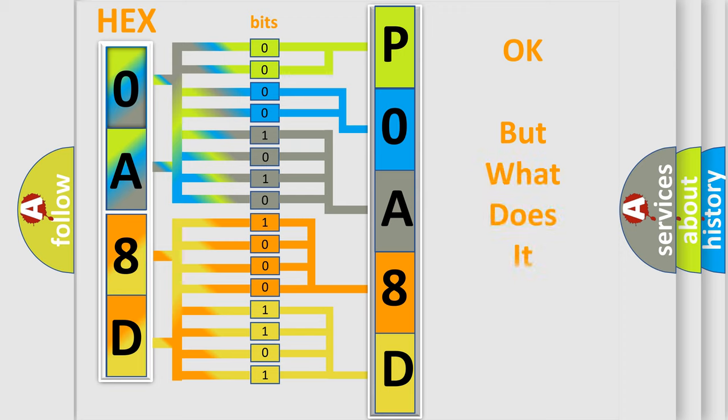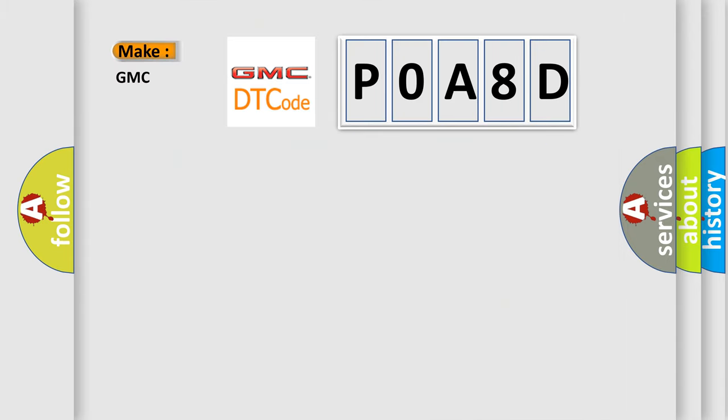The number itself does not make sense to us if we cannot assign information about what it actually expresses. So, what does the diagnostic trouble code P0A8D interpret specifically for GMC car manufacturers?